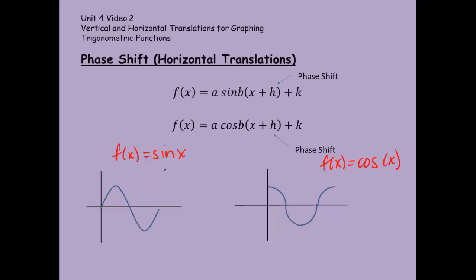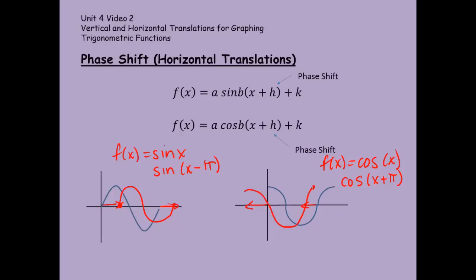If we're moving sine of x minus pi, then I would be shifting everything over to the right by pi and my graph would look like this. And if I was doing, for example, our cosine graph and I wanted to do the cosine of x plus pi, then I would be moving everything over to the left by pi and my graph would look like this.